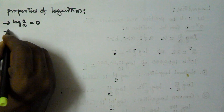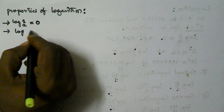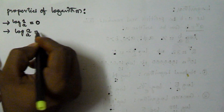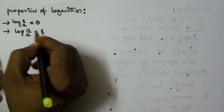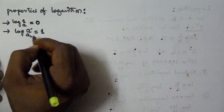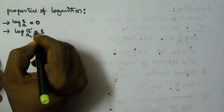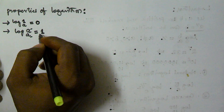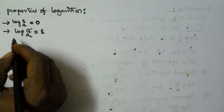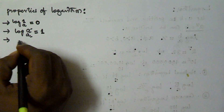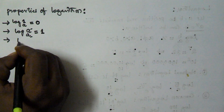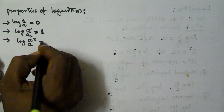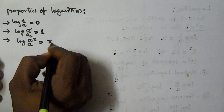The second property is log a base a is equivalent to 1. So if the value and the base are both the same, then the value of the whole logarithm is going to be 1. The third property is log a^x base a is equivalent to x.